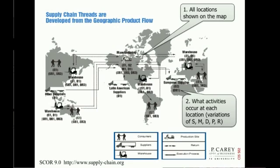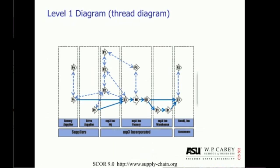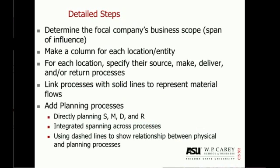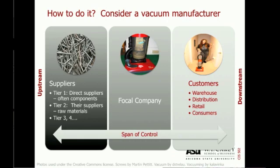When you put these elements together, you can draw Level 1 diagrams. There are two techniques for doing that. One shows the geographic locations of each facility within the supply chain on a map. The Thread Diagram is what we're going to focus on, as it allows you to look at upstream and downstream suppliers and customers without requiring geospatial placement on a map. To create a Level 1 diagram, you need to understand the scope of your company's business influence — how many tiers of suppliers upstream and how many levels downstream. Once you've identified the scope, you start drawing by making columns for each location, specifying the physical processes — source, make, deliver, and return — linking those with solid lines, and then adding in the planning processes.